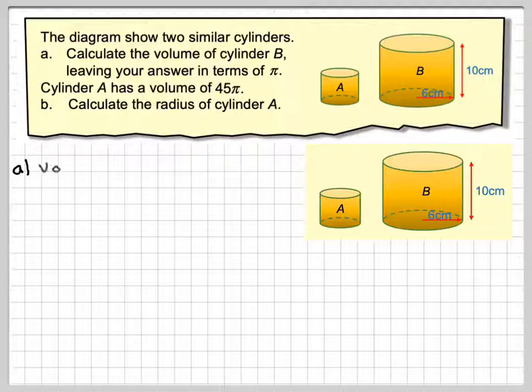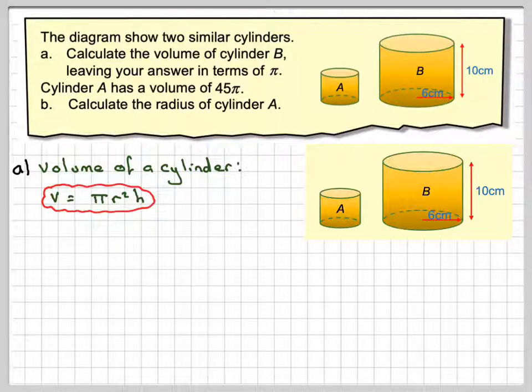OK, so if the volume of a cylinder is pi r squared, it's the area of the circle times the height, so pi r squared times h.